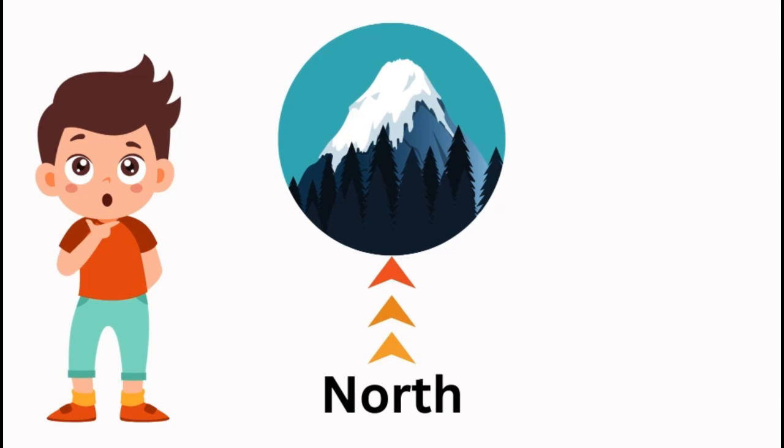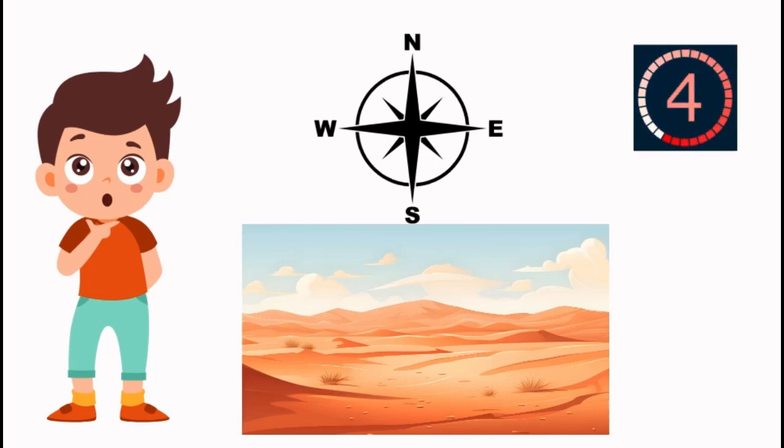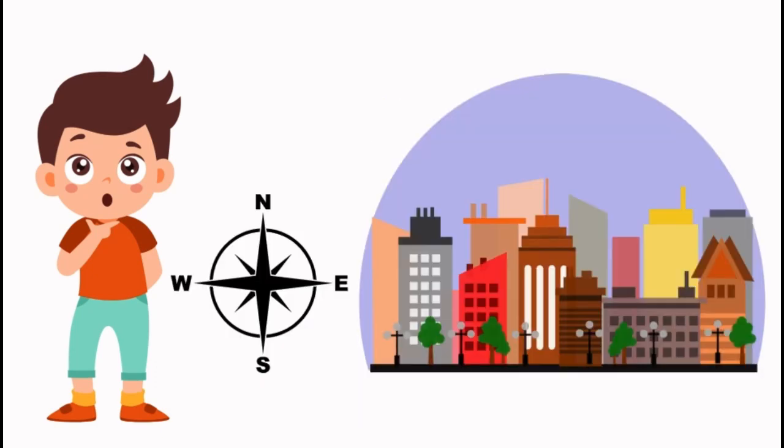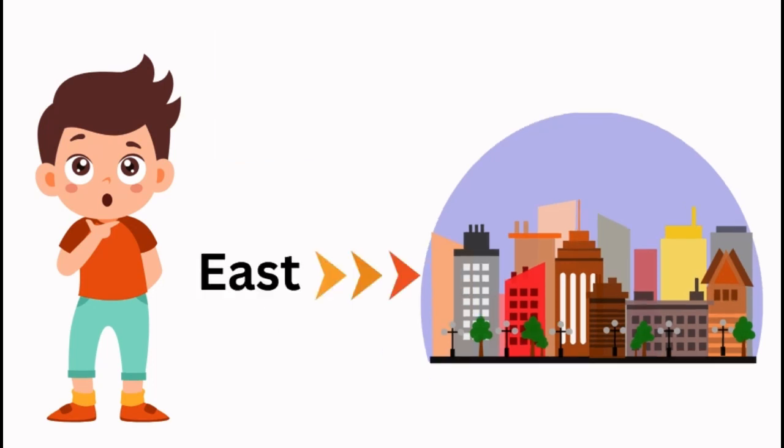A desert landscape with sand dunes. Which direction is this? Great job. It's South. A city skyline with tall buildings. Which direction is this? You got it. It's East.